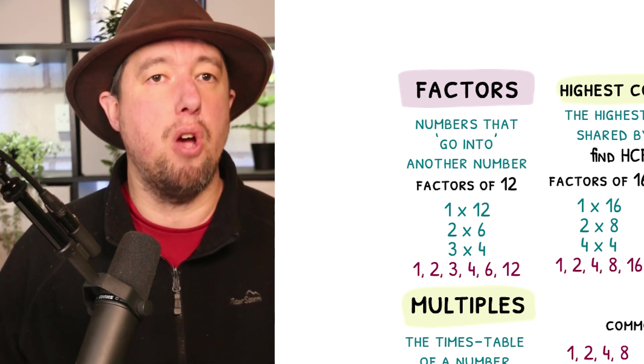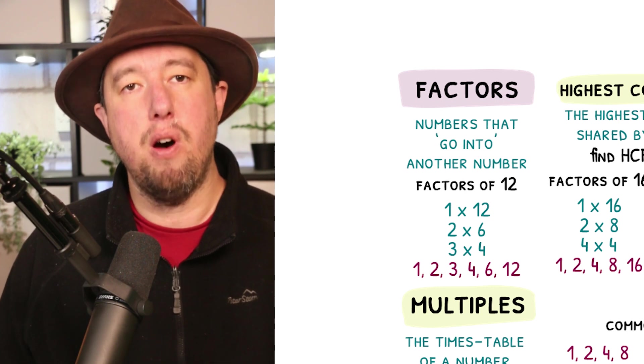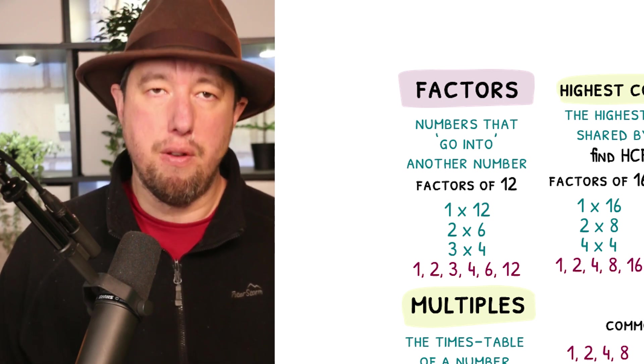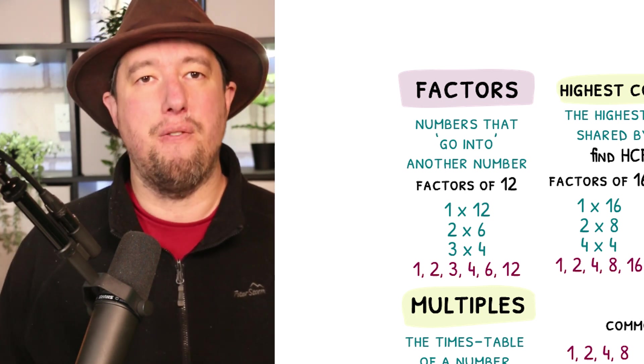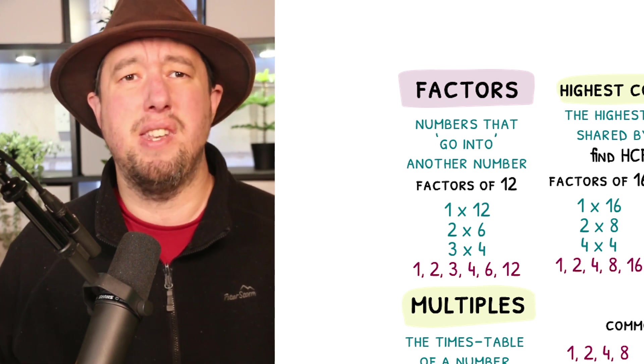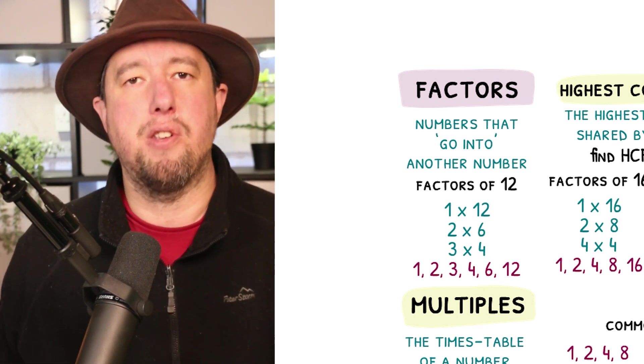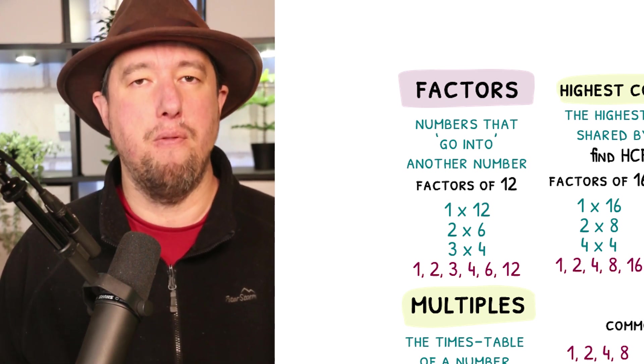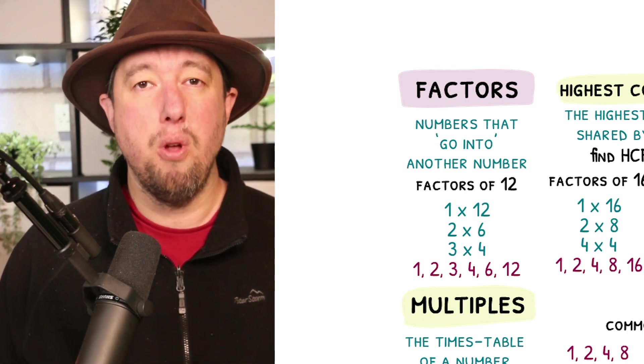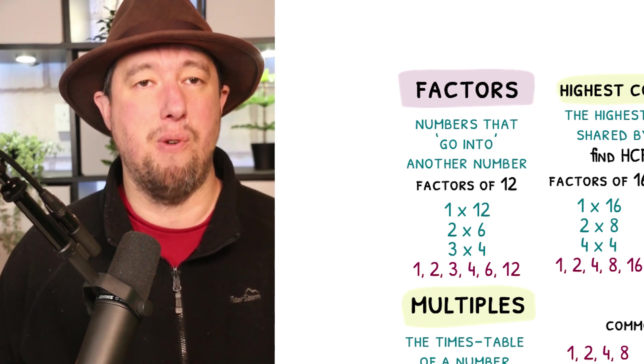Next we see whether 2 goes into 12, 2 times 6 is 12. Next we move on to 3, 3 times 4 is 12, so 3 and 4 are factors. We do not continue since the next would be 4 times 3 and we already know that both of these are factors. So the factors of 12 are 1, 2, 3, 4, 6 and 12.